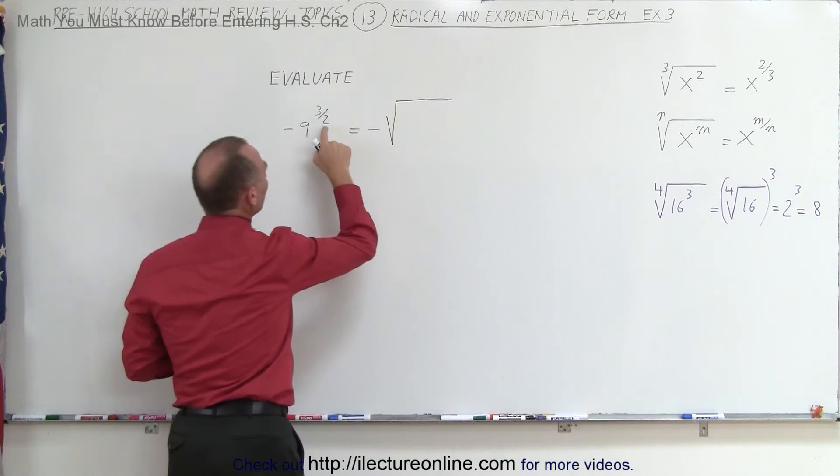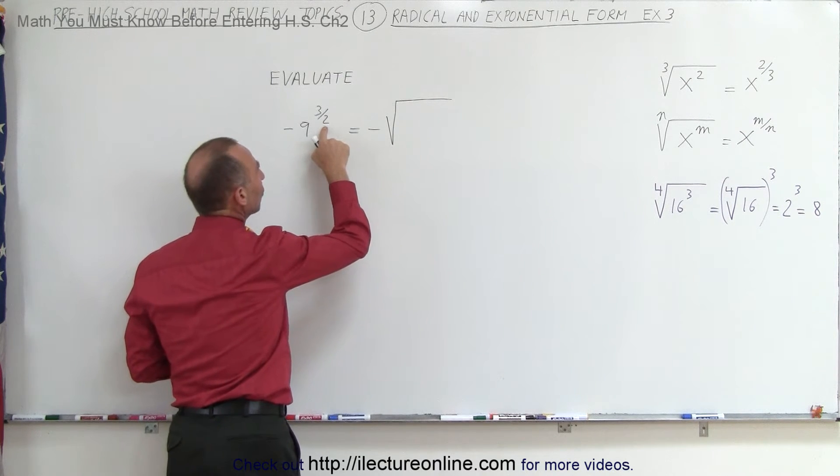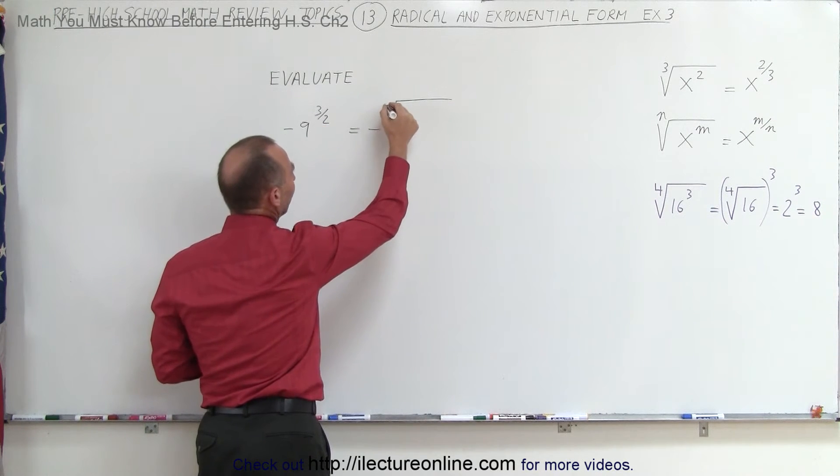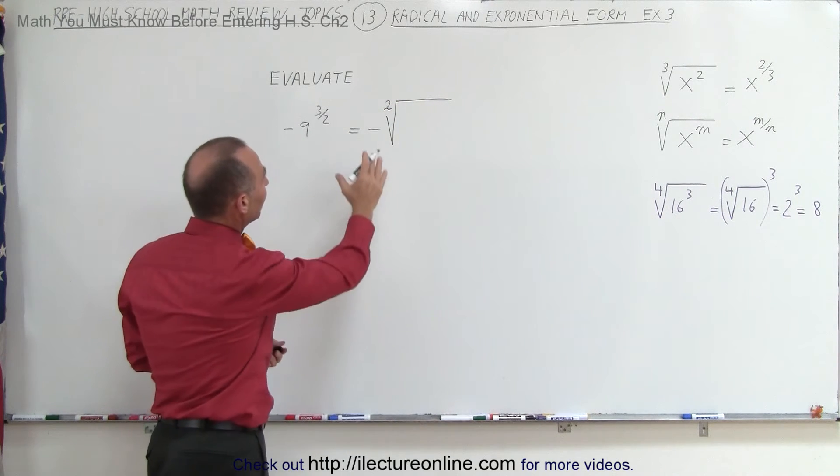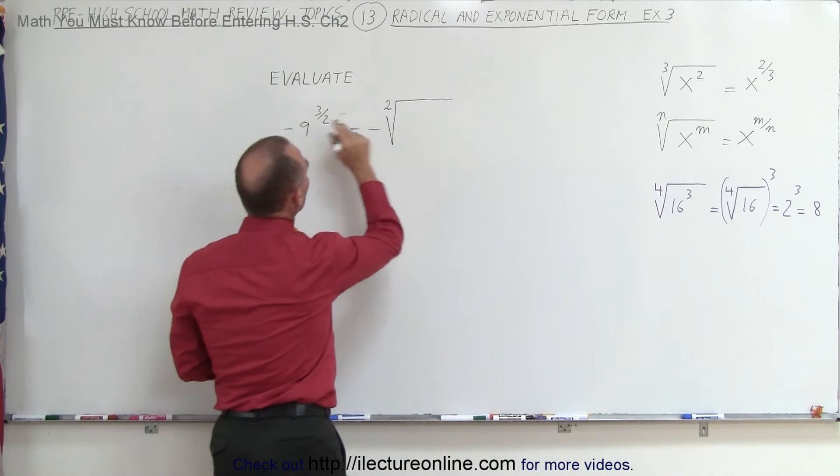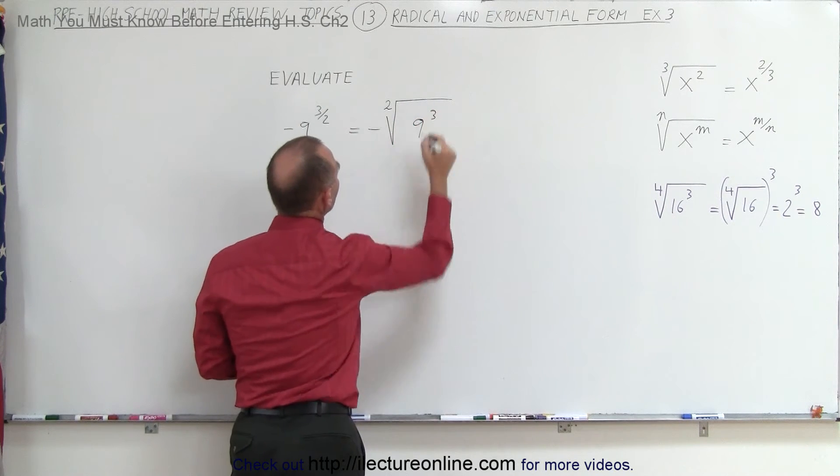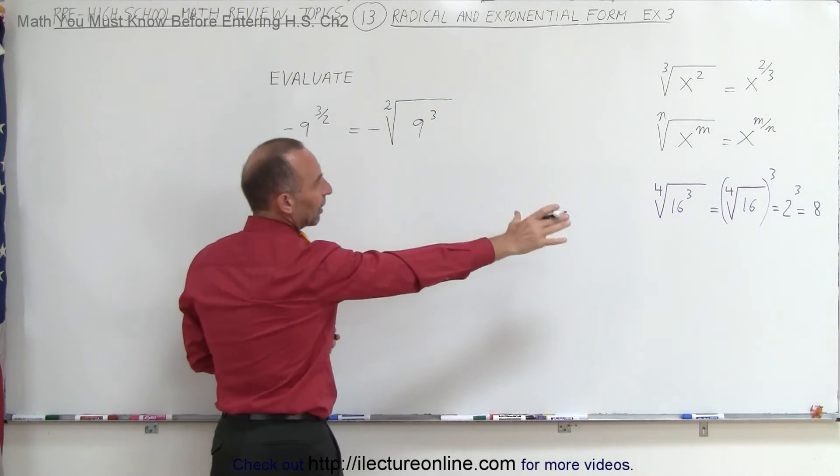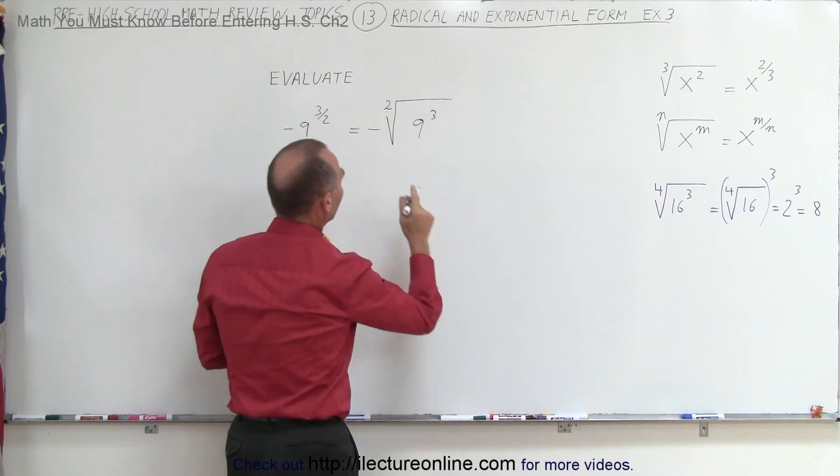In this case the number on the denominator indicates the root, so it's the square root. We don't have to write the 2, but just so that it becomes clear, I'll write the 2 there anyway. That's the square root of 9 cubed, and because we have that there, now we can use that as an example.